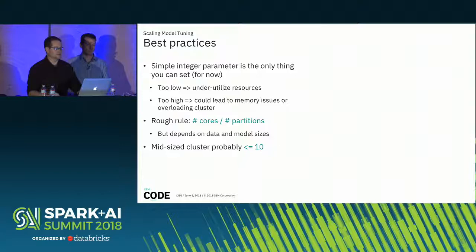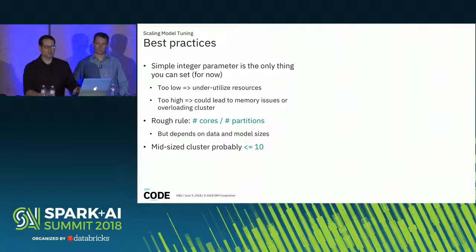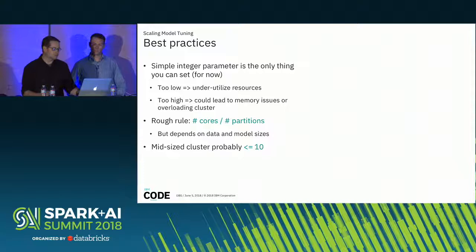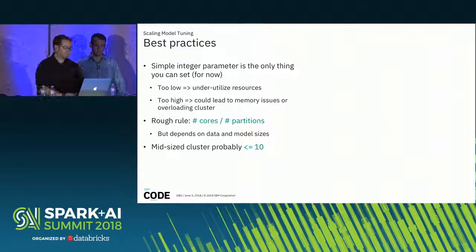Some best practices when using this in production: one issue is that you only have a simple integer to set with this parameter, so it can be a little tricky. If you set it too low, you might underutilize your cluster; if you set it too high, you might overload things and run into memory issues. A rough rule: if you know the number of cores available and the number of data partitions, you can divide those to come up with a number. But it really depends on your data size and models — a good rule of thumb for a mid-sized cluster is to set a value no more than 10.